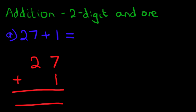Now we can also label the columns. The one on the right-hand side is units. The one next to it is the tens. So we've got the units column and the tens column.